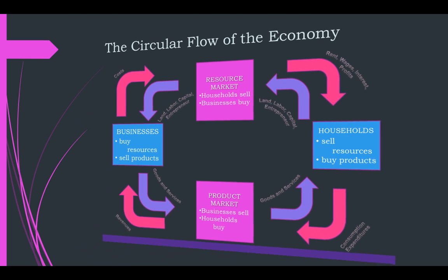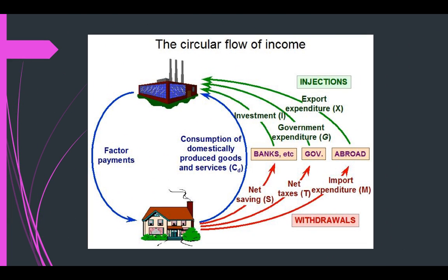We're not done here. There are other factors and other groups involved in the macroeconomy. We have households and businesses, but households don't just give their money to businesses and businesses don't just pay households. There are three other groups: banks and the financial sector, the government, and the foreign sector. Money that households pay to each of these groups is known as leakages from the circular flow — money going outside of the circular flow — but these all come back into the circular flow at some later date.